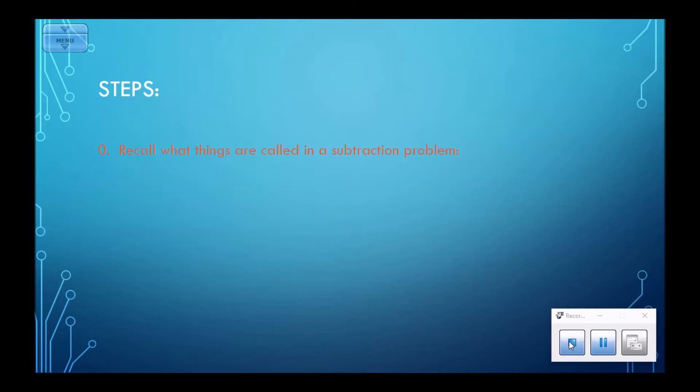So let's go through the steps here. Step zero, I kind of put this in here as a joke, but it's going to make it so I can refer to things correctly. I want you to remember that we have minuend minus subtrahend equals difference. So the first thing is the minuend, the second thing is the subtrahend, and the third thing or the answer is the difference.